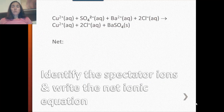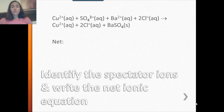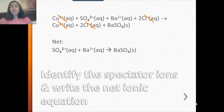Let's look at this example from your notes. You're given a complete ionic equation and asked to identify the spectator ions, then write the net ionic equation. Remember, look for ions that are the same on both sides of the arrow. I see copper 2+ here and here, so I'll cross those out as spectators. There's one other set — the chloride ions, there and there. What's left is your net ionic equation: sulfate plus barium yields barium sulfate, and barium sulfate is the precipitate.